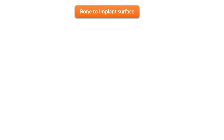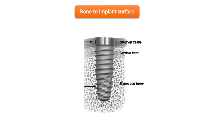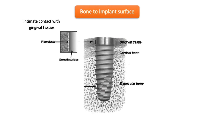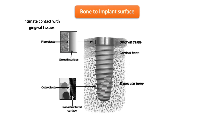Integration between bone and implant can occur in different ways. There can be intimate contact with gingival tissues, resulting in fibro-osseous integration where connective tissue is present between the implant and bone — also termed the studio ligament, peri-implant ligament, or peri-implant membrane. The second type is contact osteogenesis, wherein mature bone ingrowth forms around the dental implant, resulting in mechanical interlocking.